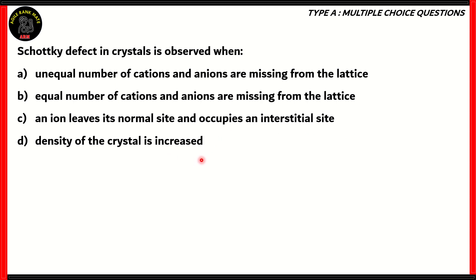So how do we solve this question? Let's look at what is the Schottky defect. Schottky defect is found when there are ions present, and it's also what we call a stoichiometric defect. In a stoichiometric defect, there will be equal number of cations and anions missing. Therefore, the correct option is option B.